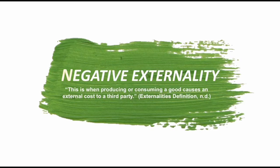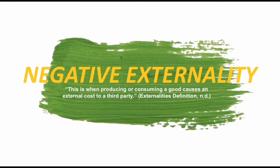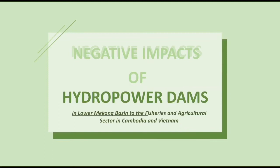Let's now move on to negative externalities. Negative externality is when producing or consuming a good causes an external cost to a third party. It causes spillover effects to any individual, resources, or even society as a whole. Negative externality arises when the social cost is greater than what is being paid for by a consumer or a producer. One of our examples for negative externality is the negative impacts of hydropower dams in the Lower Mekong Basin on the fisheries and agricultural sector in Cambodia and Vietnam.